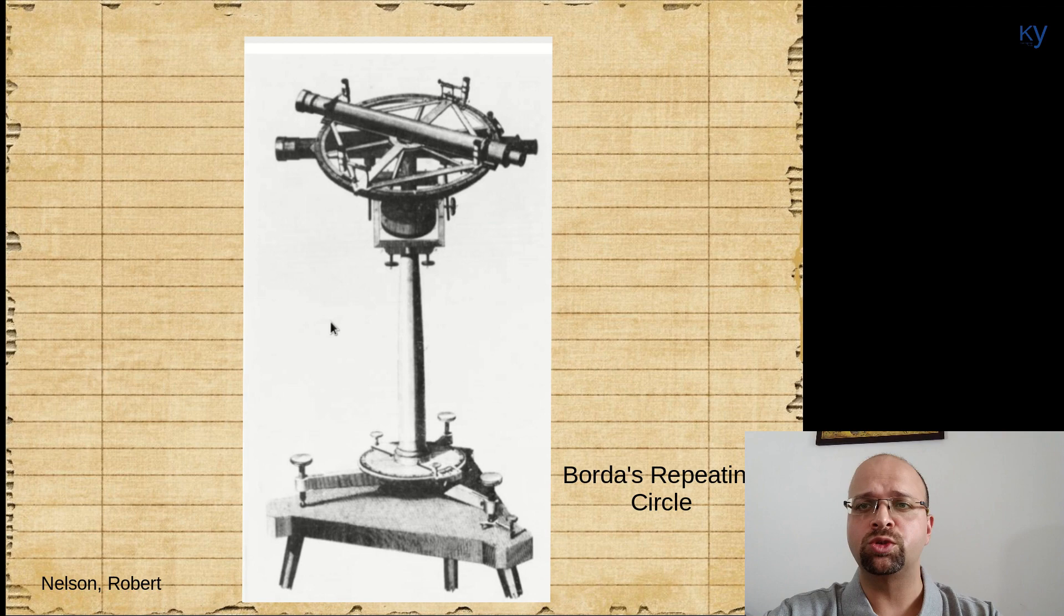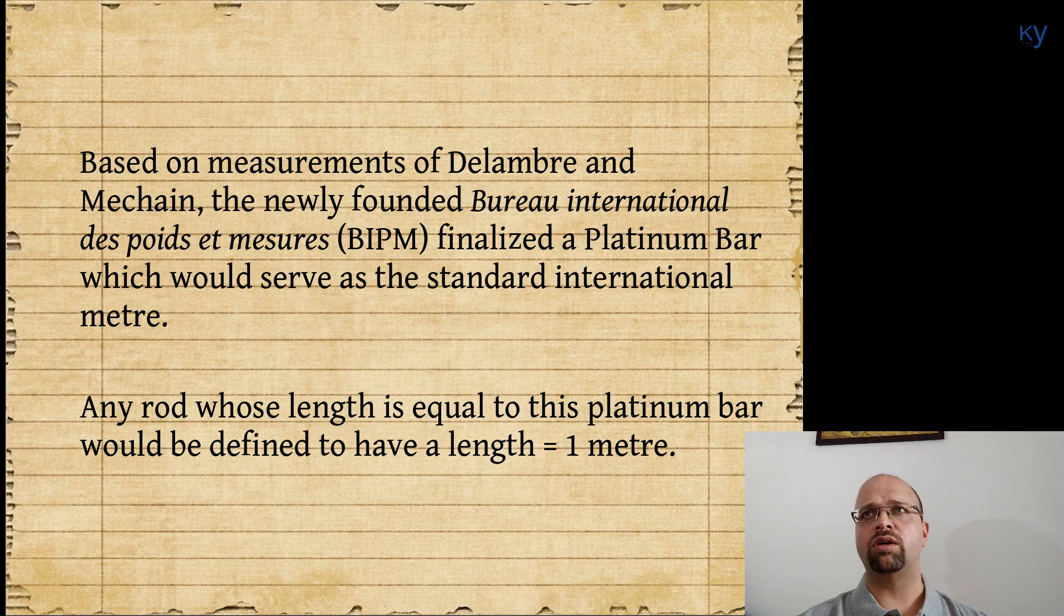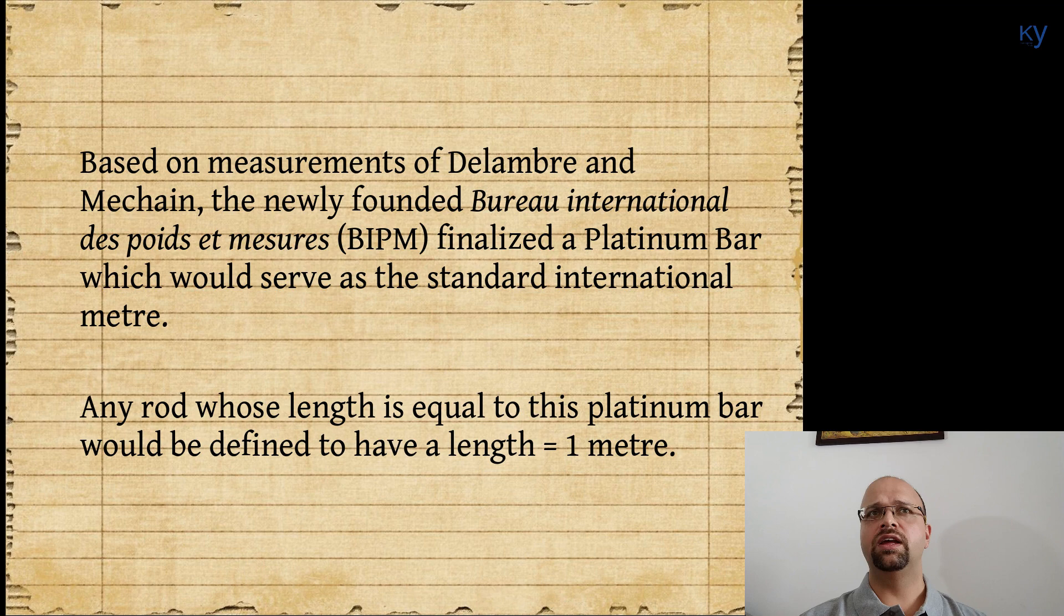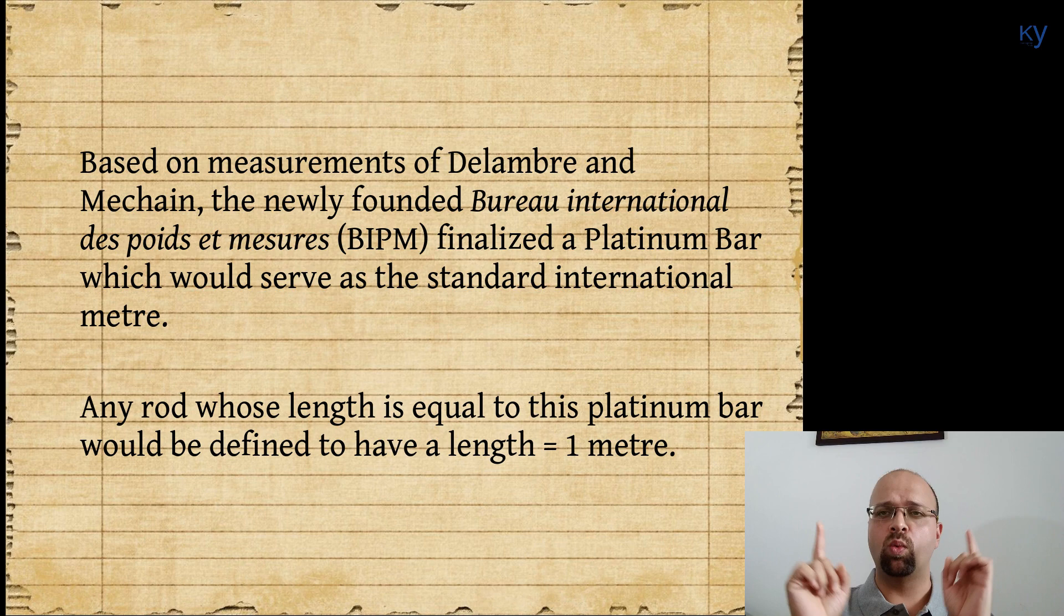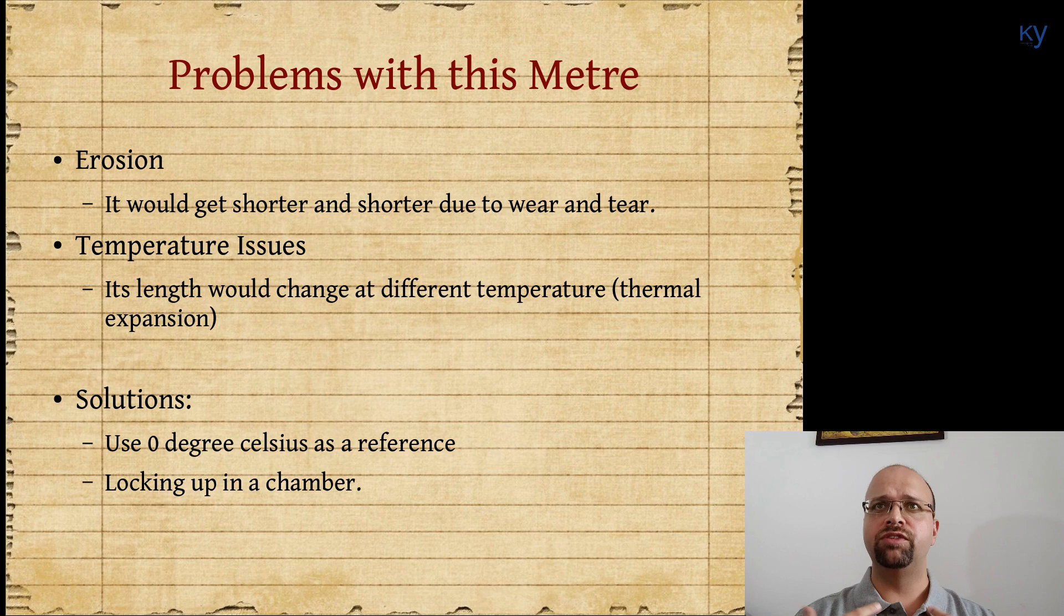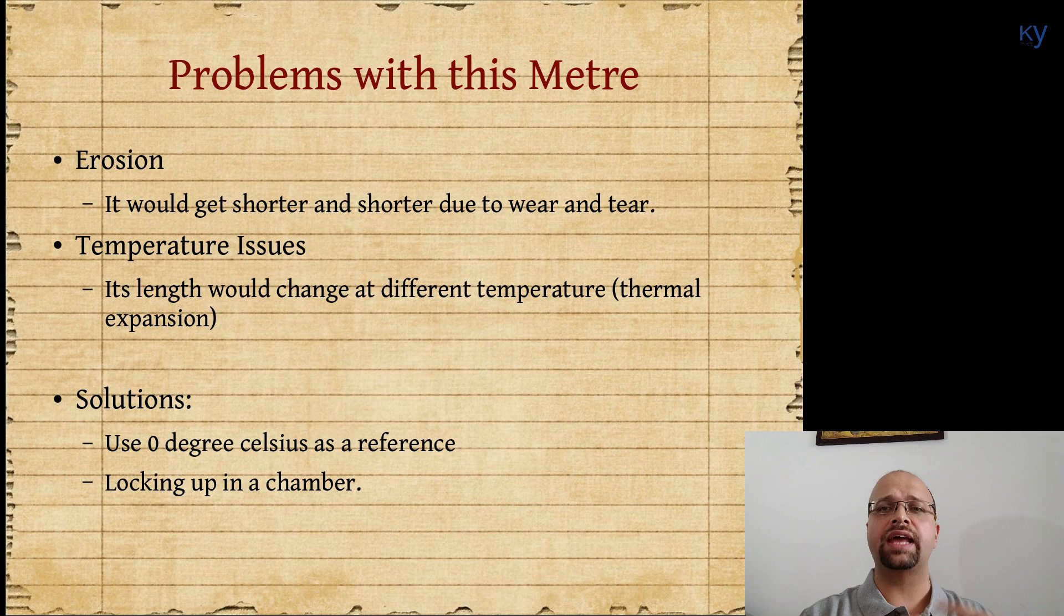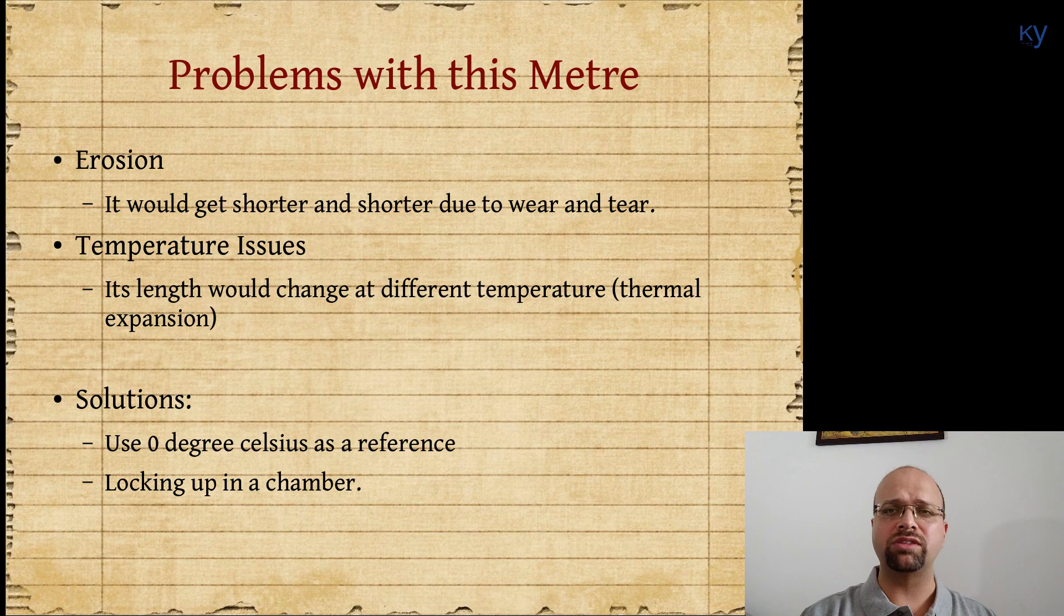This is a Borda's repeating circle, which is basically an instrument used to measure the angles. Based on the measurements of Delambre and Mechain, the newly founded Bureau of International Measurements created a platinum bar. The platinum bar is defined as one meter. But there are problems with this bar. First of all, the bar can get eroded because it's made of a material. The material can interact with oxygen and other gases and it can corrode, or even in the process of moving it from place to place, removing it, it can get wear and tear and it will get eroded.